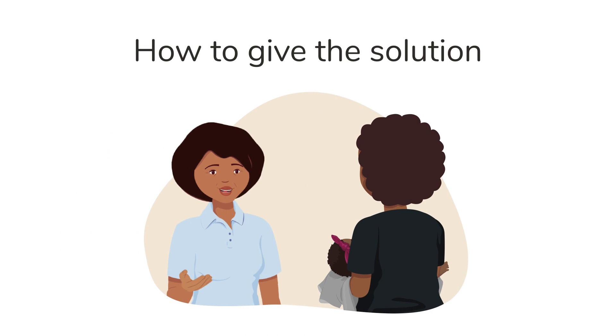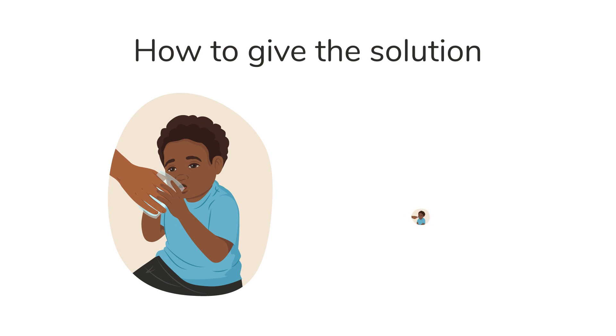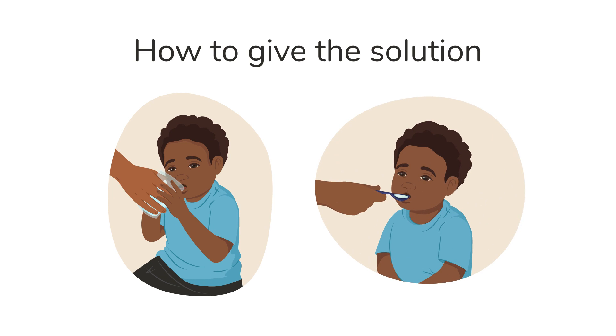Once you have made the ORS or SSS, ask the caregiver to start giving the child the solution in front of you so that you can help them. They should slowly give the child small sips from a cup or spoon as much as the child wants.